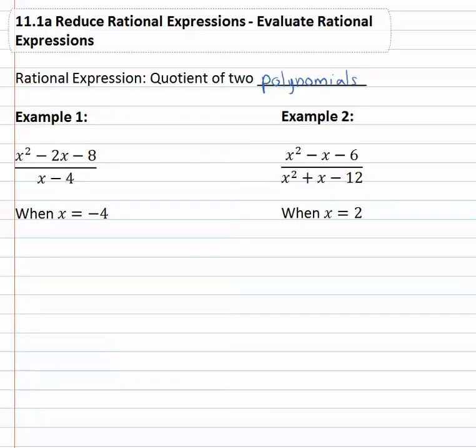For example, if we had x squared minus 2x minus 8 over the polynomial x minus 4, that's a rational expression. And if we know what x equals, we could actually evaluate this fraction and simplify it. So if x equals negative 4, we can just replace every x in the problem with negative 4.